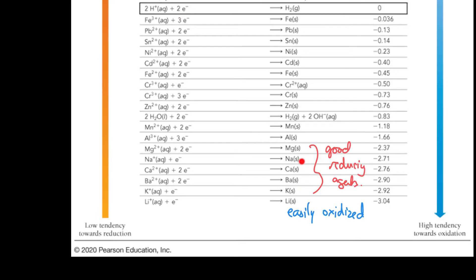Whereas things on the right hand side at the bottom of the table are really good at losing electrons and reducing other things. So these are exceptionally good reducing agents. Whereas things up to the top of my table that I had in the last slide are really good at oxidizing things.